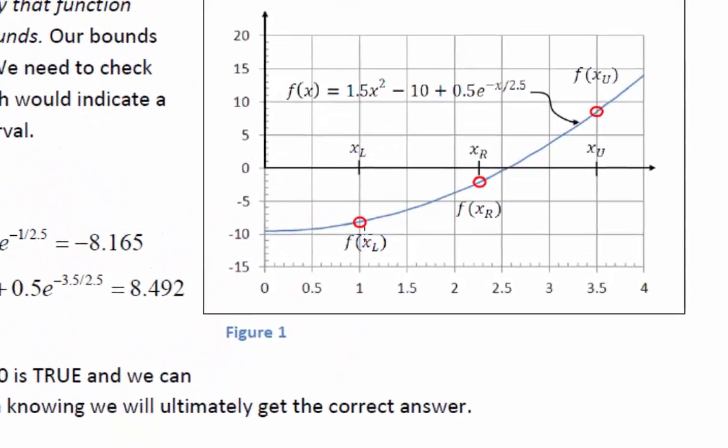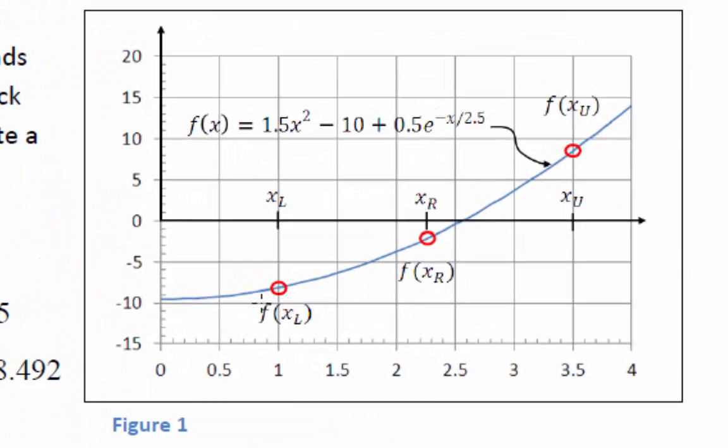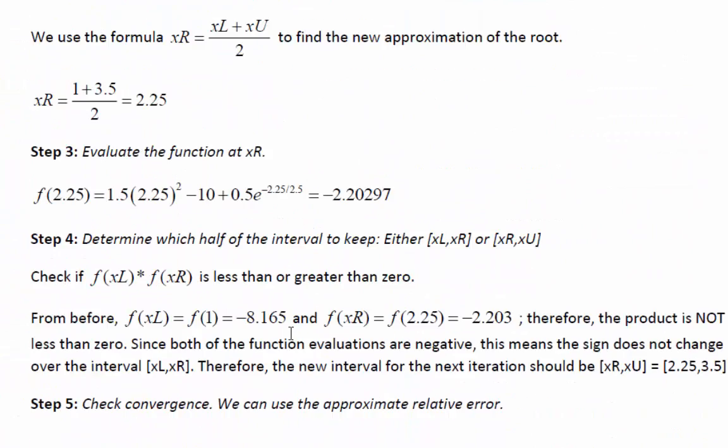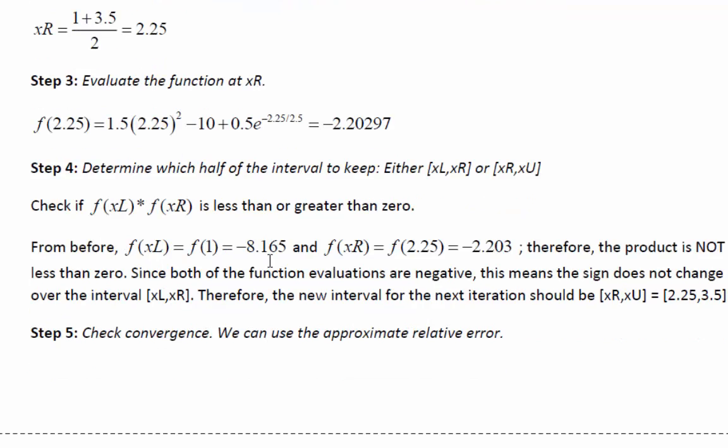Going back to our function plot, here's the lower bound, here's the function at the lower bound, here's the root approximation, and then the function at the root approximation. Looking at the graphical plot, we can see that the root's on the right-hand side between XR and XU. We can prove that mathematically by looking at the product of F at XL times F at XR. They're both negative. So we want to keep XR to XU. So our new interval is 2.25 to 3.5.